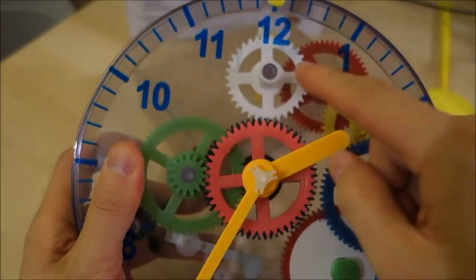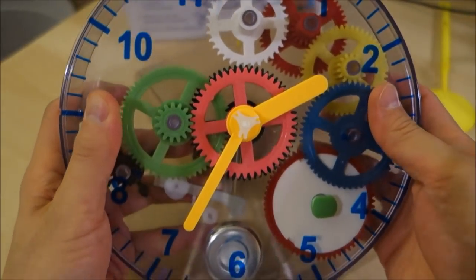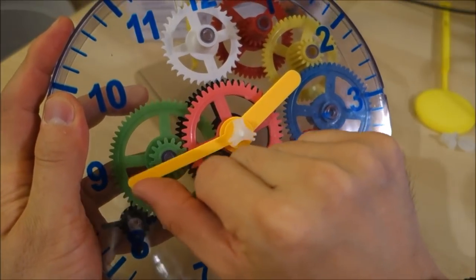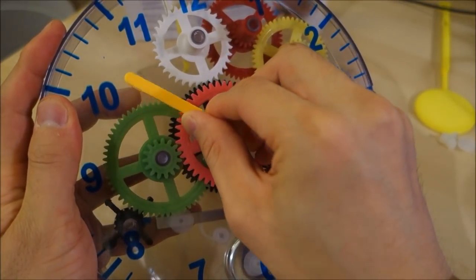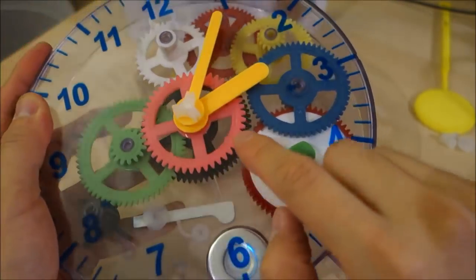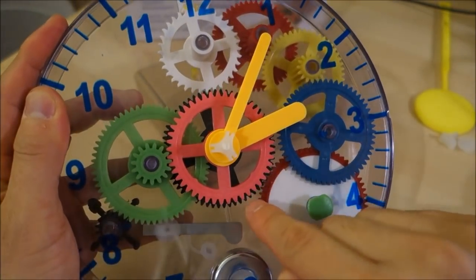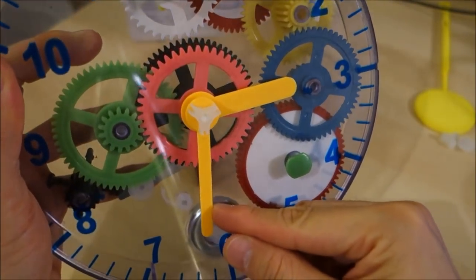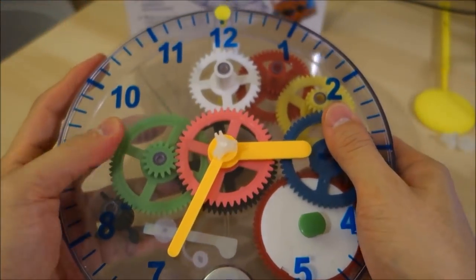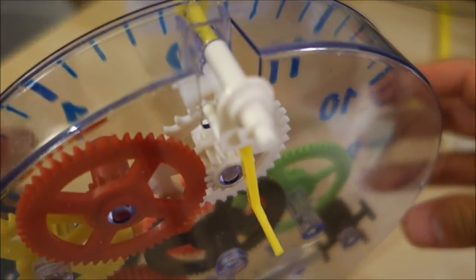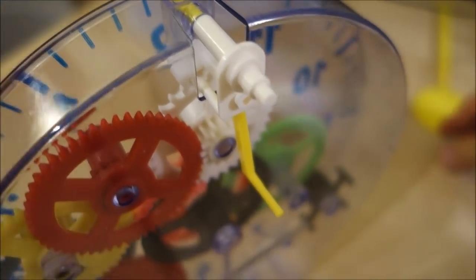There we go. Right now if I wind it up, it's not going to run because now that pallet fork is stopping the escape wheel from turning. I can demonstrate that you can actually still adjust the time independently because of that white cog in the middle that slips against the black cog. You can do that independently here. You can see that quarter hour chiming away there. Last bit is of course the pendulum.